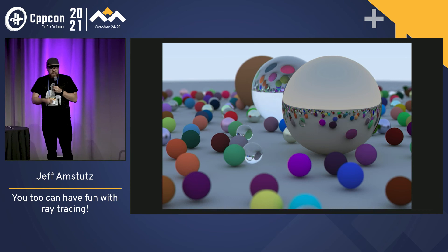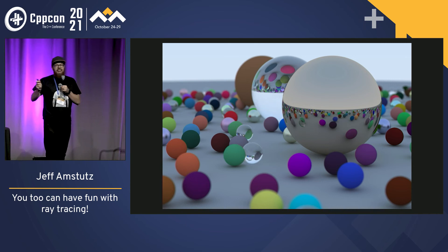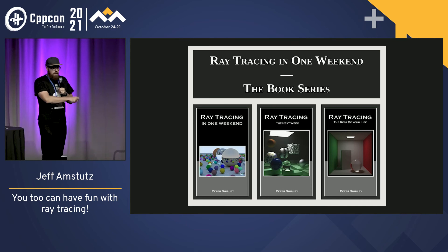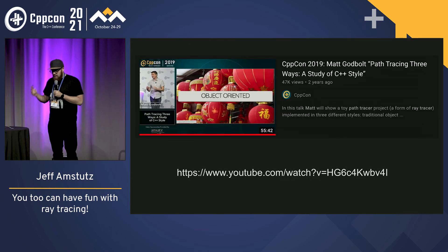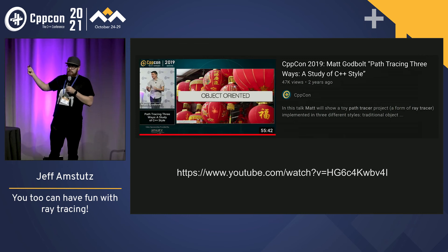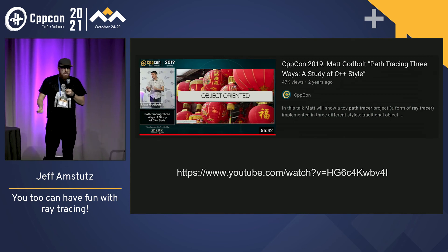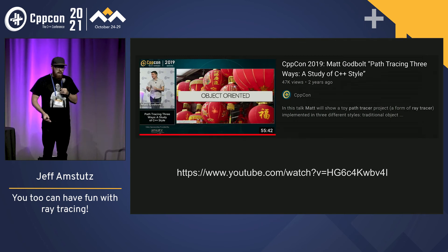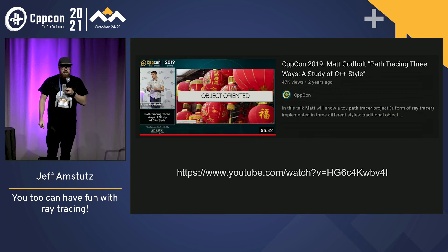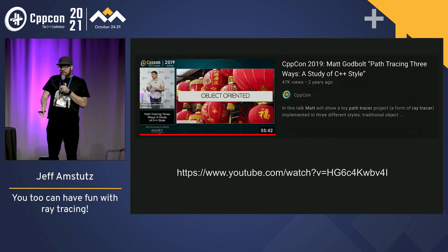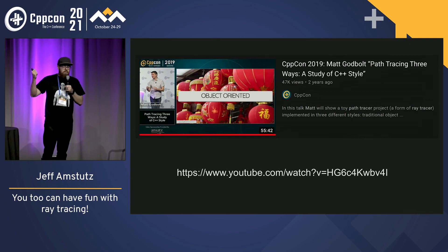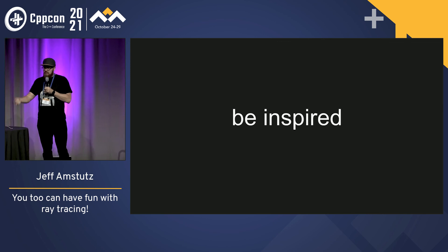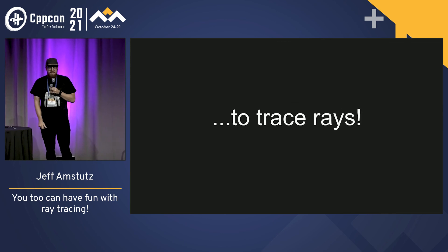Once you get that under your belt, I hope that you're hooked. I encourage you to go find these books — they're free — and have a blast. You can even have such a blast that, as we all know, Matt Godbolt — the father of Godbolt.org that we all love — actually gave a talk two years ago about how you could use these simple ray tracing algorithms to explore styles of C++. It's a fun domain to do graphics, a fun way to explore other programming languages, and a fun way to explore C++. Go have fun tracing rays, and I hope that you're inspired. Thanks, everyone.